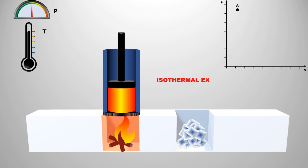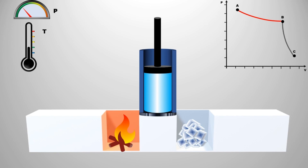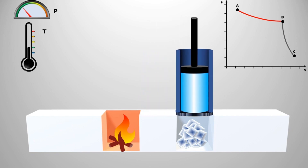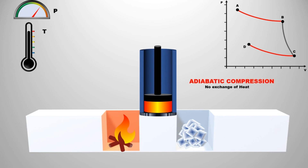First, isothermal expansion, process one to two: the gas absorbs heat from a hot reservoir while expanding at constant temperature. Second, adiabatic expansion, process two to three: the gas continues to expand without heat exchange, leading to a drop in temperature. Third, isothermal compression, process three to four: the gas releases heat to a cold reservoir while being compressed at constant temperature. Fourth, adiabatic compression, process four to one: the gas is compressed adiabatically, raising its temperature back to its original state.